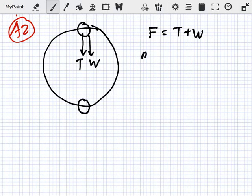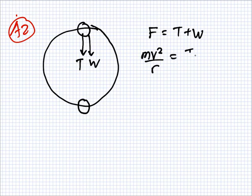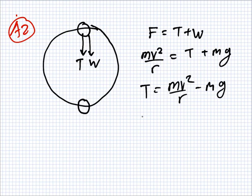Yeah, or the other formula I'll use is mv squared over r. And the tension? We don't know. The weight we do know is mg. So the tension will be mv squared over r minus mg. Or if you want, the tension will be - I'll take the m out - m times v squared over r minus g.